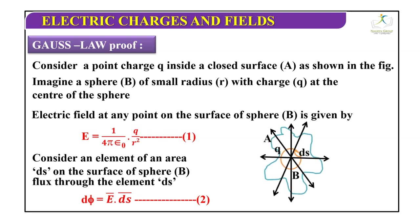Let's look at this diagram. Here dS is a surface enclosed by the Gaussian surface. The main role of the Gaussian surface is that charge must be bound inside it. If we have to bound the charges, we need a closed surface. Just like we create a boundary in the form of a wall for our home to protect things, similarly we create a boundary around the charges. That particular boundary is called a Gaussian surface.